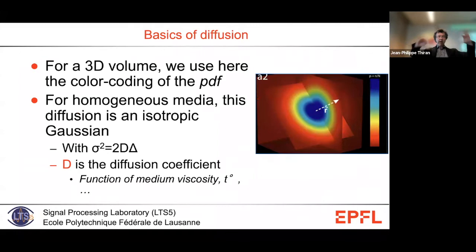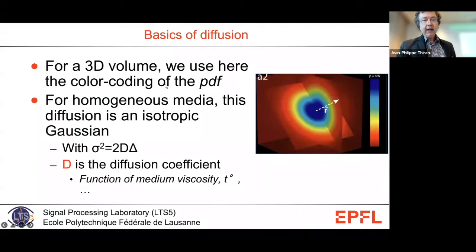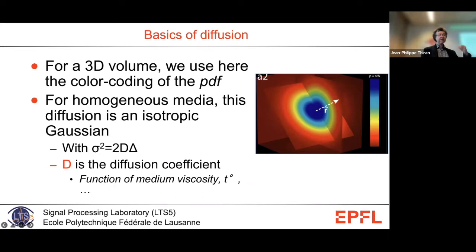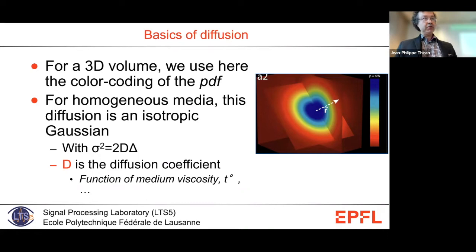In a homogeneous medium — an isotropic medium — the diffusion is the same in all directions, represented by a 3D isotropic Gaussian with variance 2Dδ, where D is the diffusion coefficient representing the medium's density and temperature, and δ is the time you wait before measuring. The more you wait, the broader the diffusion. Now, why is it interesting when considering non-homogeneous media? Let's take the white matter of the brain.